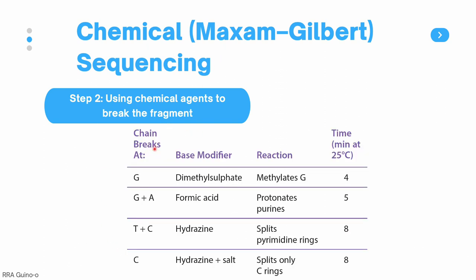In this table, we can see the different chemical agents or base modifiers used in chemical sequencing. These base modifiers break apart your DNA fragment at specific nucleotides using different actions, and we can also see the incubation time for each. Dimethyl sulfate (DMS) breaks the DNA fragment at guanine. Formic acid breaks apart at guanine and adenine. Hydrazine breaks the chain at thymine and cytosine. And hydrazine salt breaks the chain at cytosine.